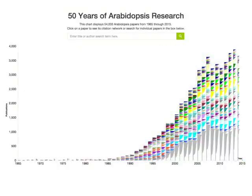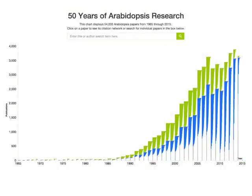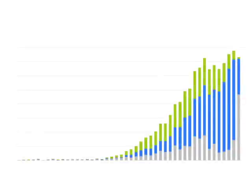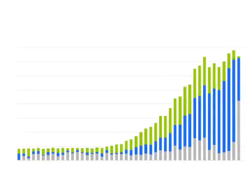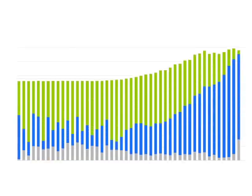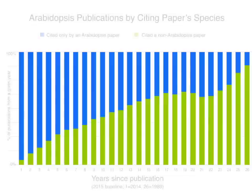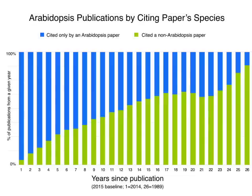A third of the papers have been cited by non-Arabidopsis researchers, represented by the green bars here. The yearly impact outside of Arabidopsis research increases for older papers, meaning Arabidopsis is having a huge impact in plant biology.